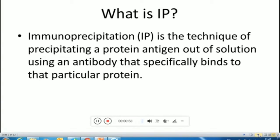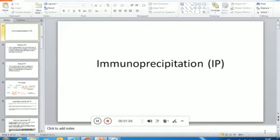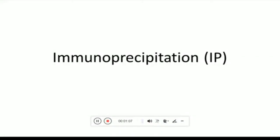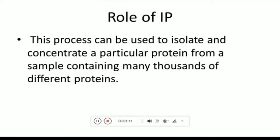Immunoprecipitation is a technique of precipitating a protein antigen out of a solution using an antibody that specifically binds to that particular protein. Its role is to isolate and concentrate a particular protein from a sample containing many thousands of different proteins. It uses either monoclonal or polyclonal antibodies to target a particular protein or antigen from a sample which contains various proteins.